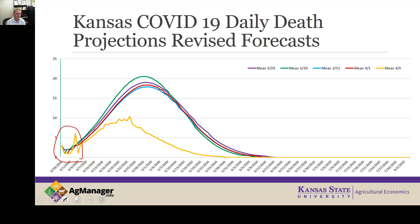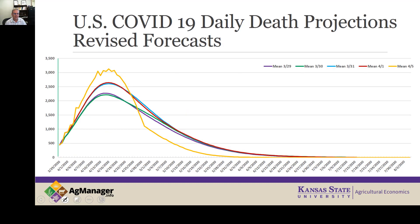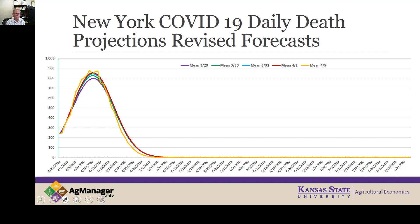The latest revision of the model in Kansas certainly decreased the daily expected deaths by quite a bit. For the U.S. as a whole, the most recent revision actually increased the deaths, and it does appear that the model has lengthened out the amount of time we will be struggling with this — a little further into April than the original models projected. If we look at New York, in some respects these trace very closely, and so revisions being made to the New York model have not been large — they've been very close to what was originally done.